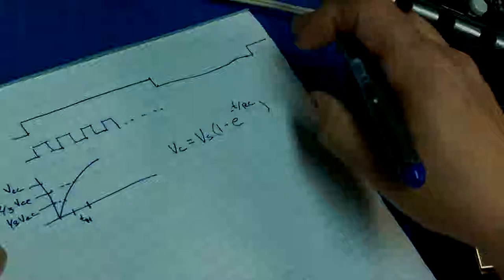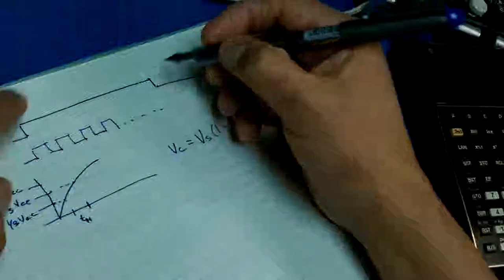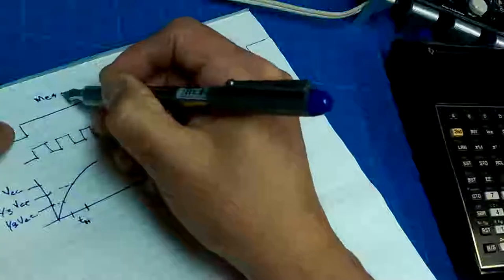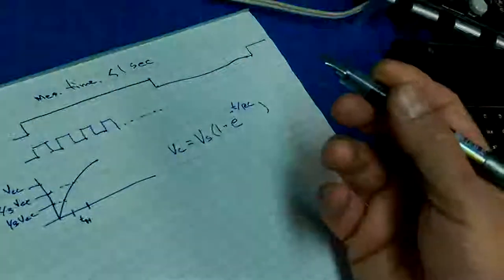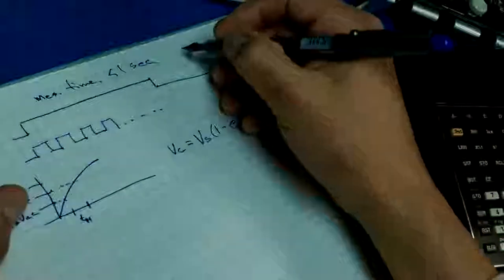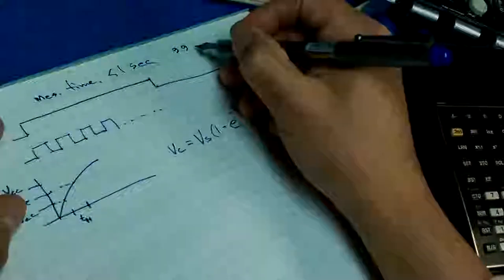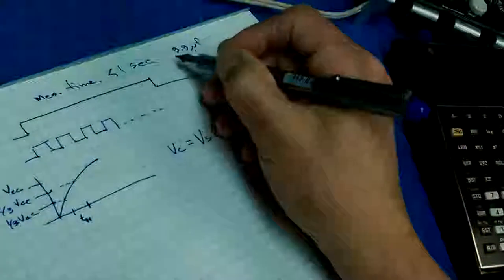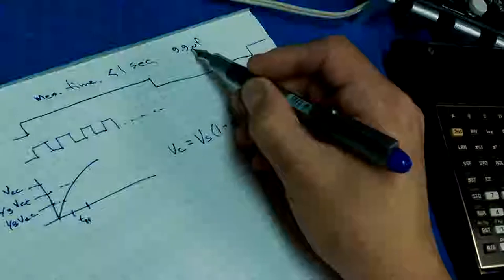What are we trying to design around? We're trying to design around a measurement period for our largest capacitor. If we say our measurement time has to be less than 1 second — that's the longest we're going to tolerate taking samples — and we're measuring our largest capacitor, say 9.9 microfarads, that's the constraint.